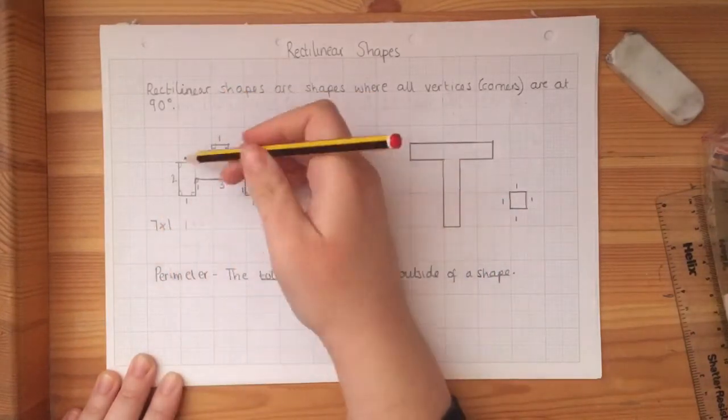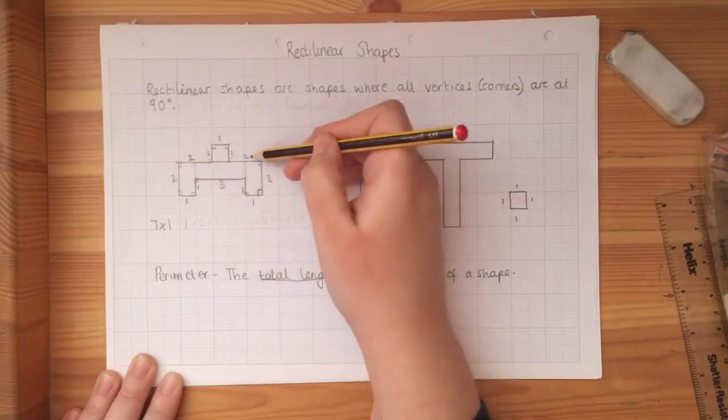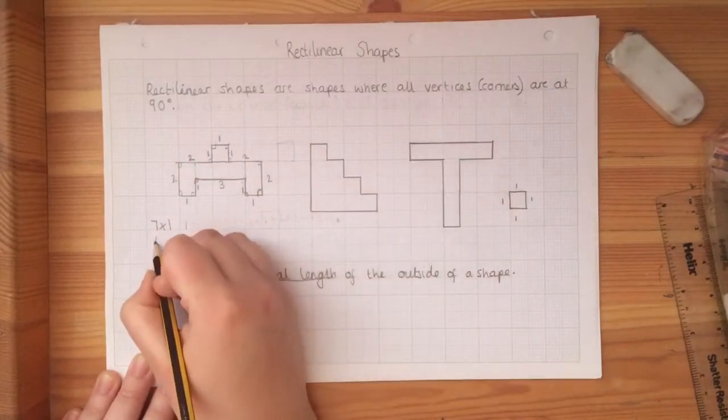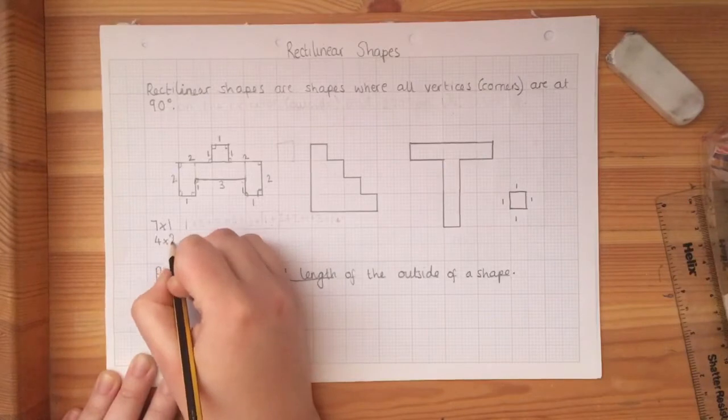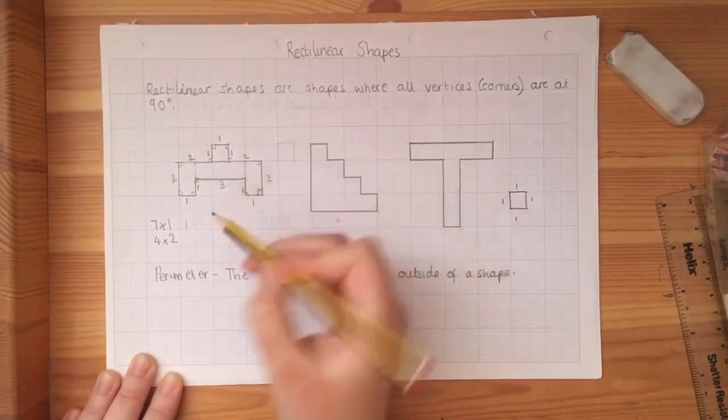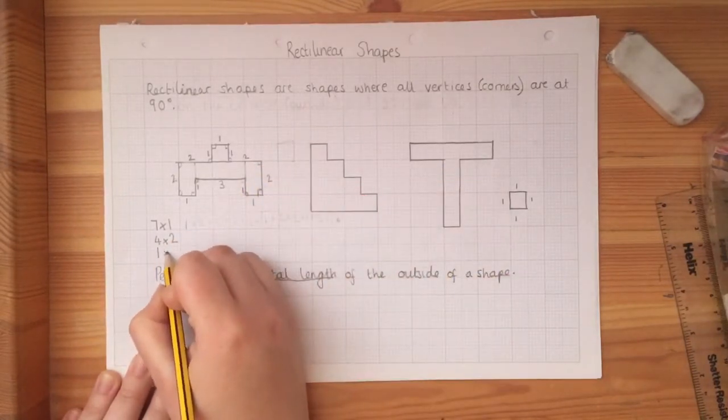Then I'm going to look at my twos next. So I've got one, two, three, four. So I've got four times two. And lastly, I've got one three. So that's one times three.